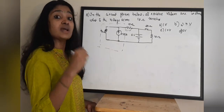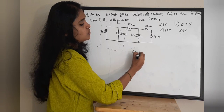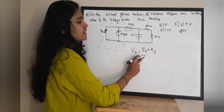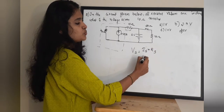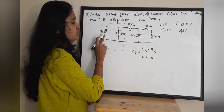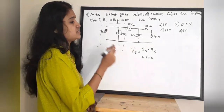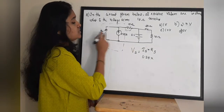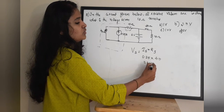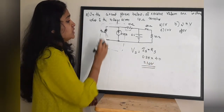To obtain the value of the equivalent voltage source, use Vs = Is × Rs. The current source value Is is 0.25 ampere and Rs — the resistor connected in series — is 40 ohms. So 0.25 × 40 equals 10 volt. Therefore the equivalent voltage source value is 10 volt.